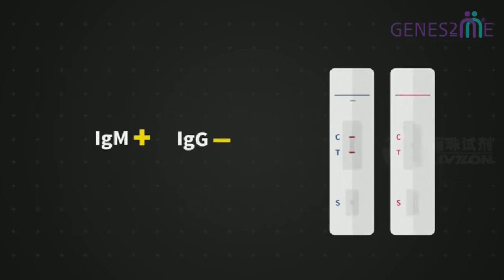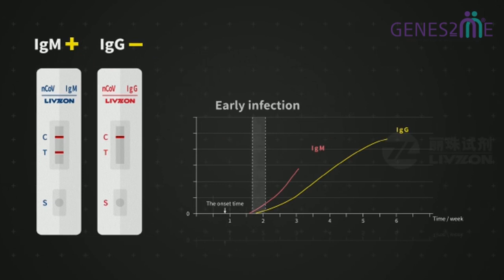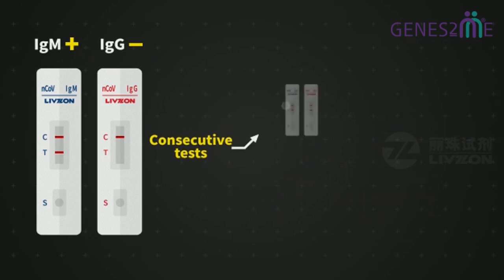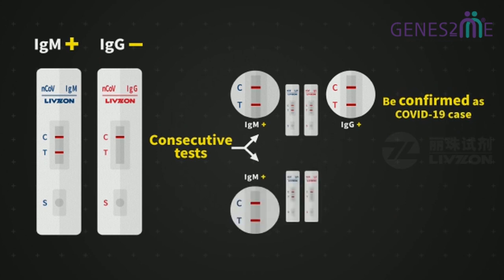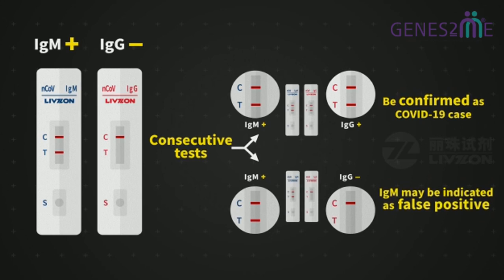When IgM positive and IgG negative, it might be an early infection case whose antibody should be tested and monitored consecutively. If IgG converts from negative to positive, the patient may be confirmed as infection. If IgG is repeatedly tested as negative, IgM may be indicated as false positive.